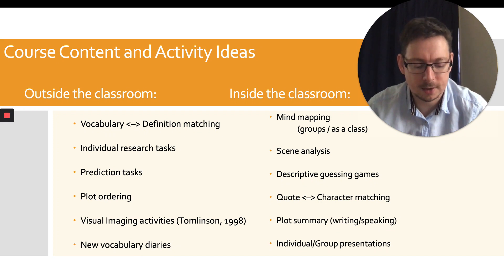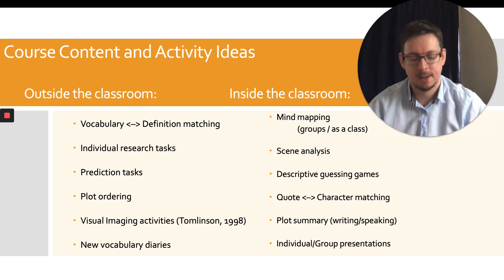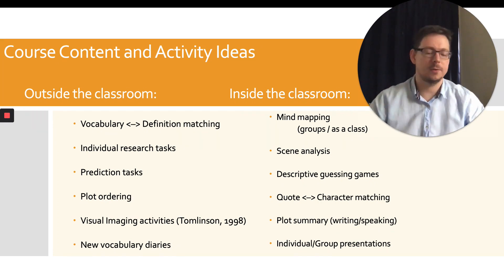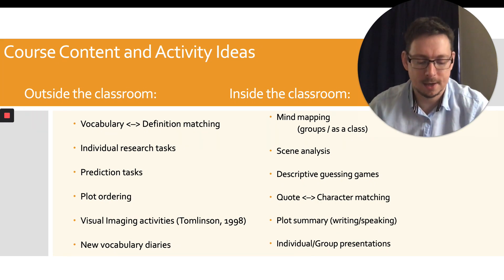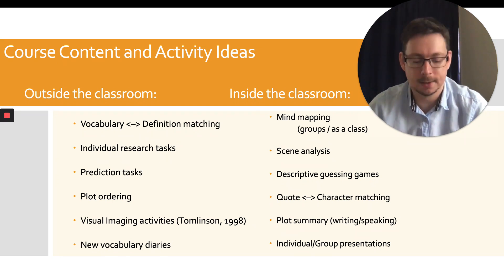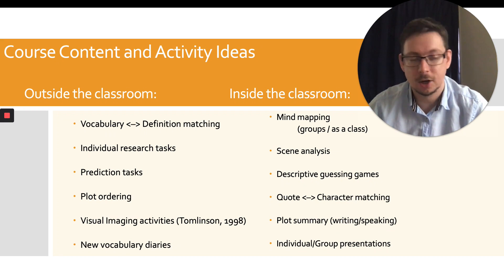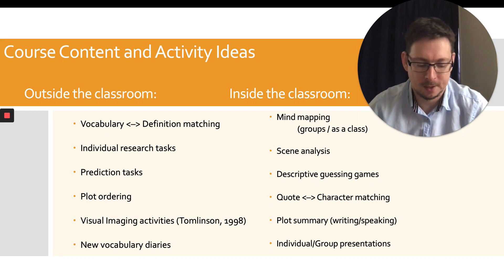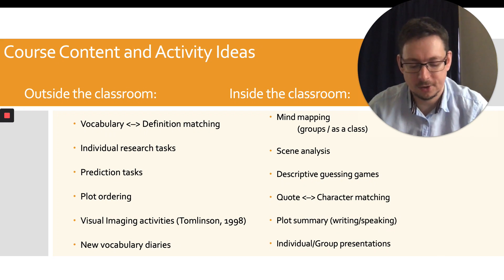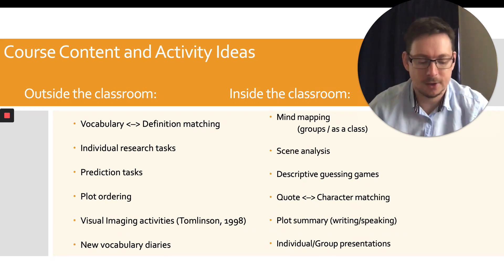Take, for example, the film Gladiator. As part of the before activities, they were given a vocabulary matching activity which included the following words: Empire, Dictatorship, Senate, Corruption, Gladiator and Hero. By completing this activity, students already gained a sense of what the narrative of the film might be.